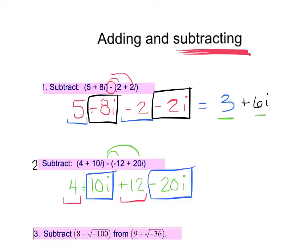After carefully distributing the negative and rewriting, bracket the common terms. 4 plus 12 gives 16, and combining the i terms: 10i minus 20i gives negative 10i. Hopefully you have that answer as well.